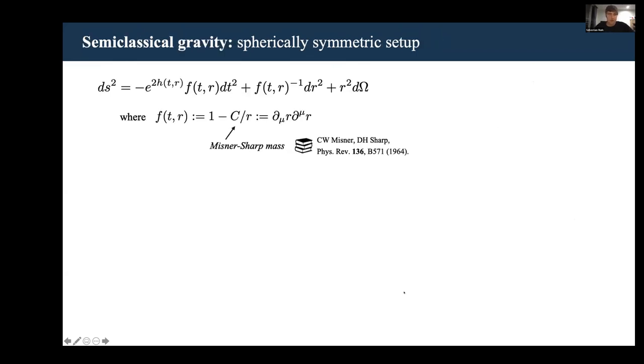Let's have a look at the situation in spherical symmetry. In Schwarzschild coordinates, you can specify by writing down the line element that I've given here, where this function f is defined as one minus c over r. And c, or more precisely c/2, is the Misner-Sharp mass.